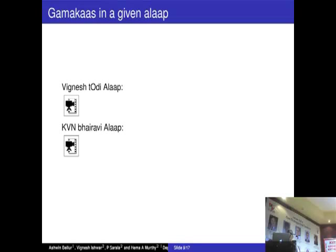I have another example where we looked at compositions by Ravi Yala. The colored version marks all the Gamakas. But what we find is that there are a very large number of phrases in between, and the Gamakas are only occasionally used. So we realized that perhaps this is not the primary way we should look at things.